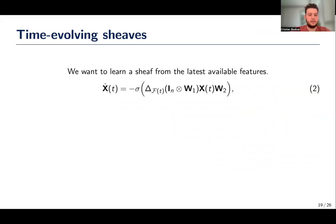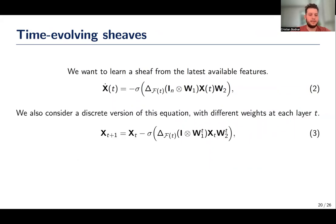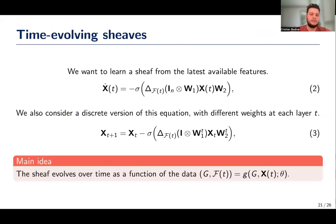Overall, we consider a new non-linear sheaf diffusion process, where the sheaf also evolves over time. This allows the model to make use of the latest available features to construct a suitable geometry for solving the task. This introduces a new paradigm in graph representation learning, where the features are concomitantly evolved with the graph geometry.